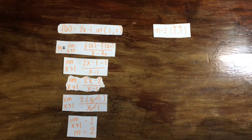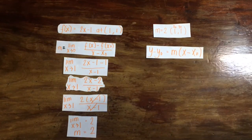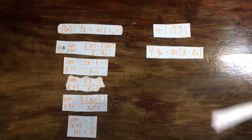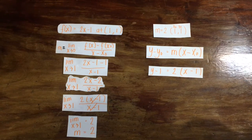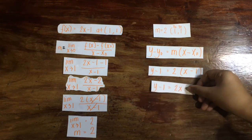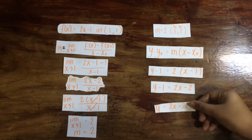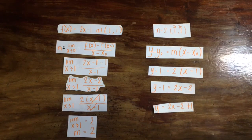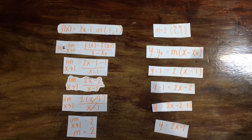Given the slope 2 and the point (1, 1), we substitute the values into the point-slope formula. We distribute 2 to x minus 1 to obtain 2x minus 2. Then using the addition property, we move negative 1 to the right side of the equation and combine like terms. The equation of our tangent line is y equals 2x minus 1.